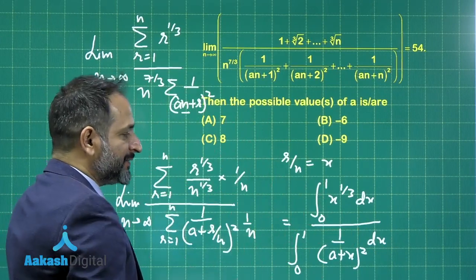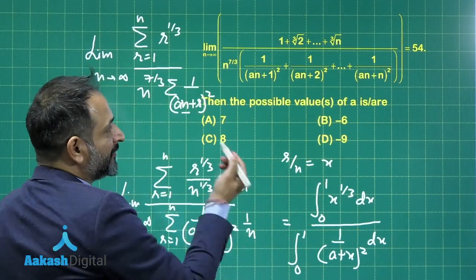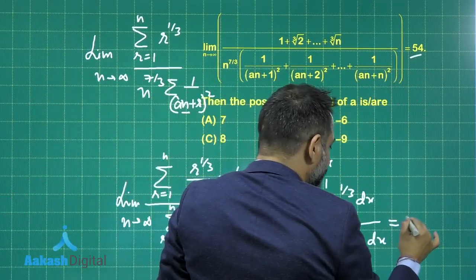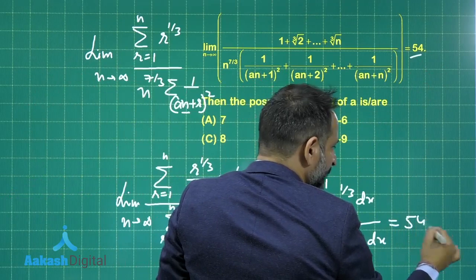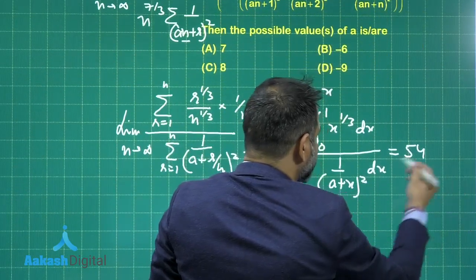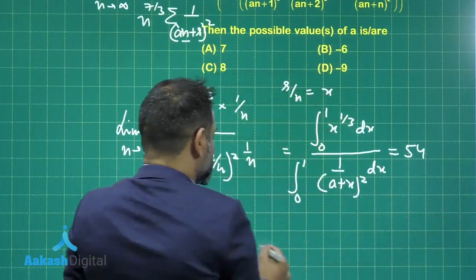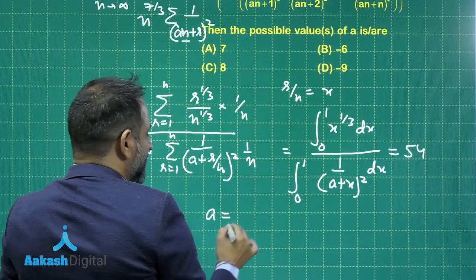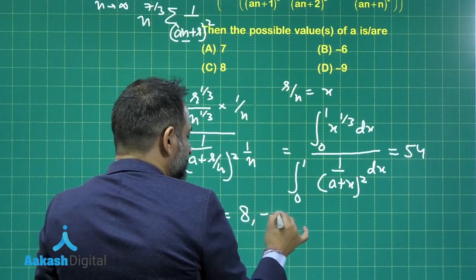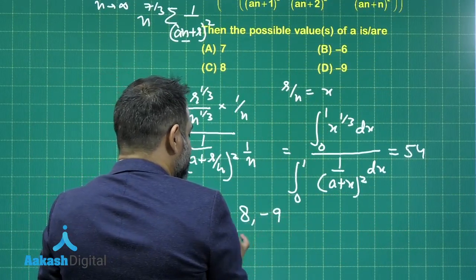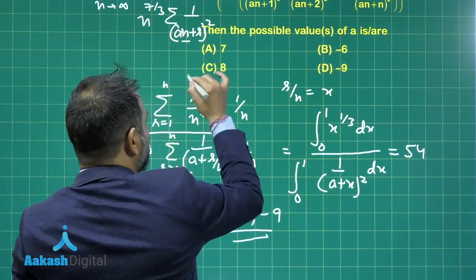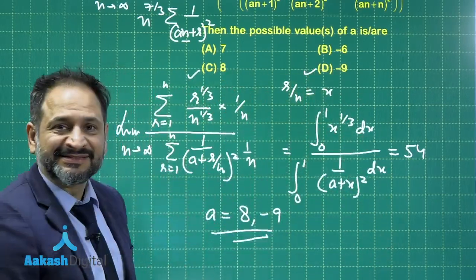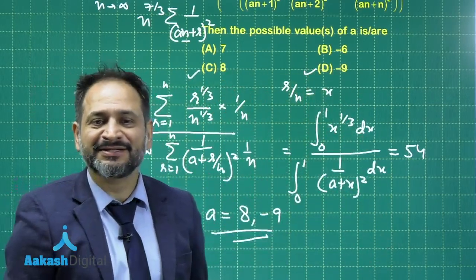If you calculate this value and equate it to the given value, that is 54, this integral can be easily done. The value of a will come out to be 8 and minus 9. So the correct options here are option C and D.